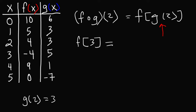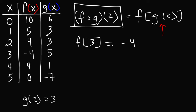Now when x is 3, what is the value of f? When x is 3, we can see that f is equal to negative 4. So f of g of 2 is equal to negative 4. And that's how you solve it.